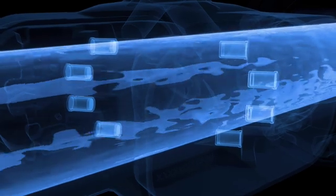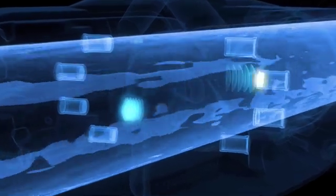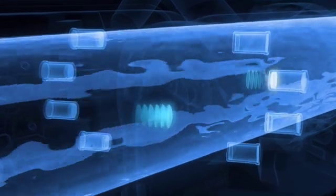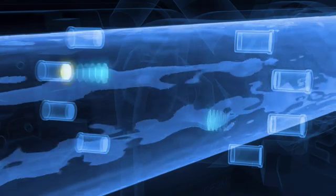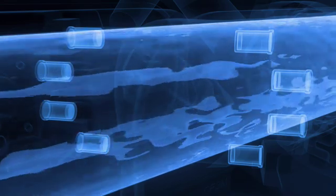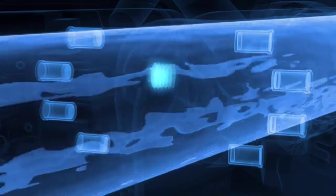Once the fluid starts to flow in the measuring tube, the ultrasonic signals are accelerated in the direction of the flow and decelerated against the flow. As a result, the ultrasonic signals now have different transit times.